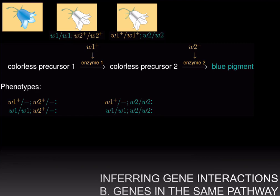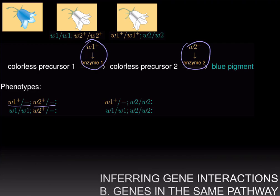If you are W1+/– and W2+/–, that means you have at least one copy of the W1+ wild type allele so you make enzyme 1, and at least one copy of W2+ so you have enzyme 2. Then you will convert colorless precursor 1 into colorless precursor 2, which will then get converted into blue pigment. Therefore, you are going to be blue.